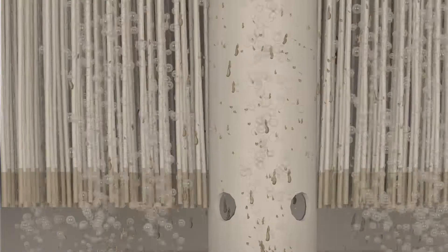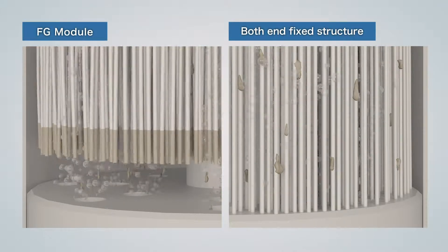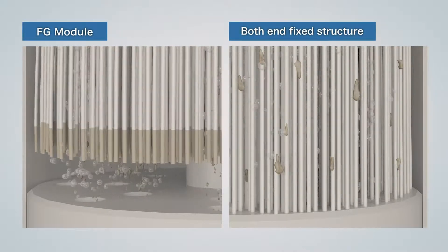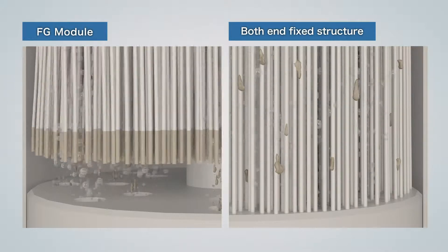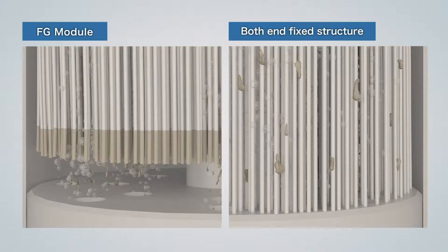The FG module employs a one-end free structure, as the bottom of the hollow fiber membrane is not fixed. Thus, compared to a conventional both-ends fixed structure, the hollow fiber membrane can sway easily, and so the discharge of particles is excellent.